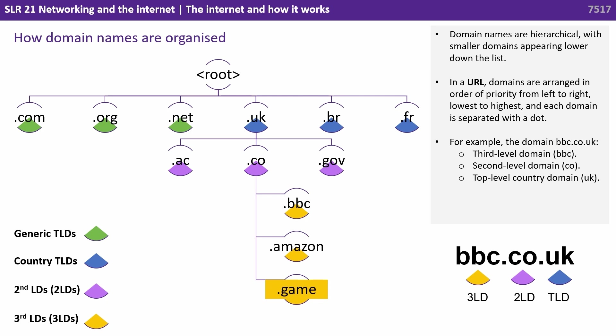Domain names are hierarchical, with smaller domains appearing lower down the list. In a URL, domains are arranged in order of priority from left to right, lowest to highest, and each domain is separated with a dot.